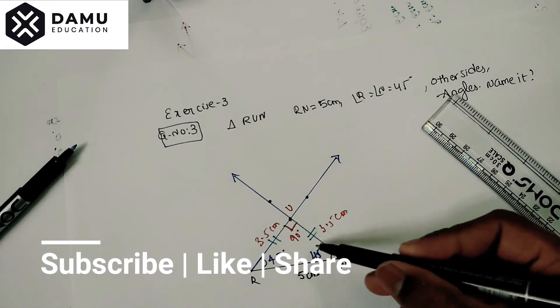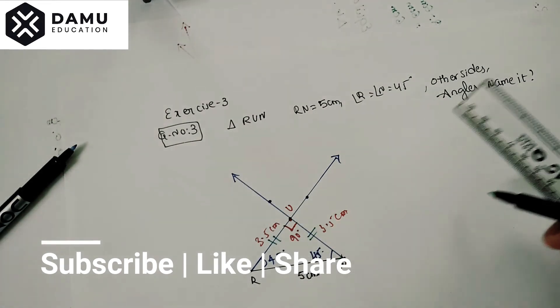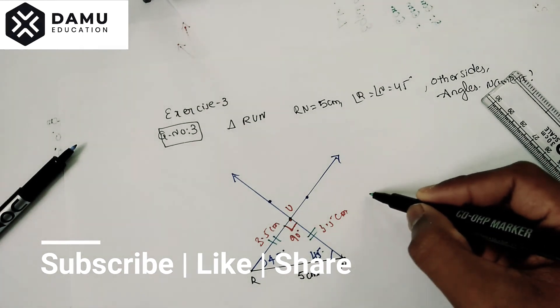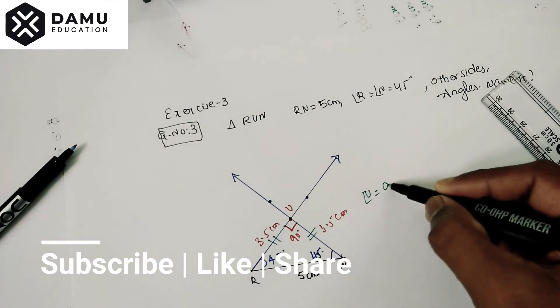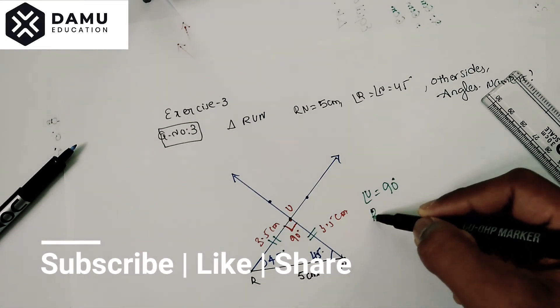These two sides are equal, so the opposite angles are also equal to each other. Then what is this triangle?